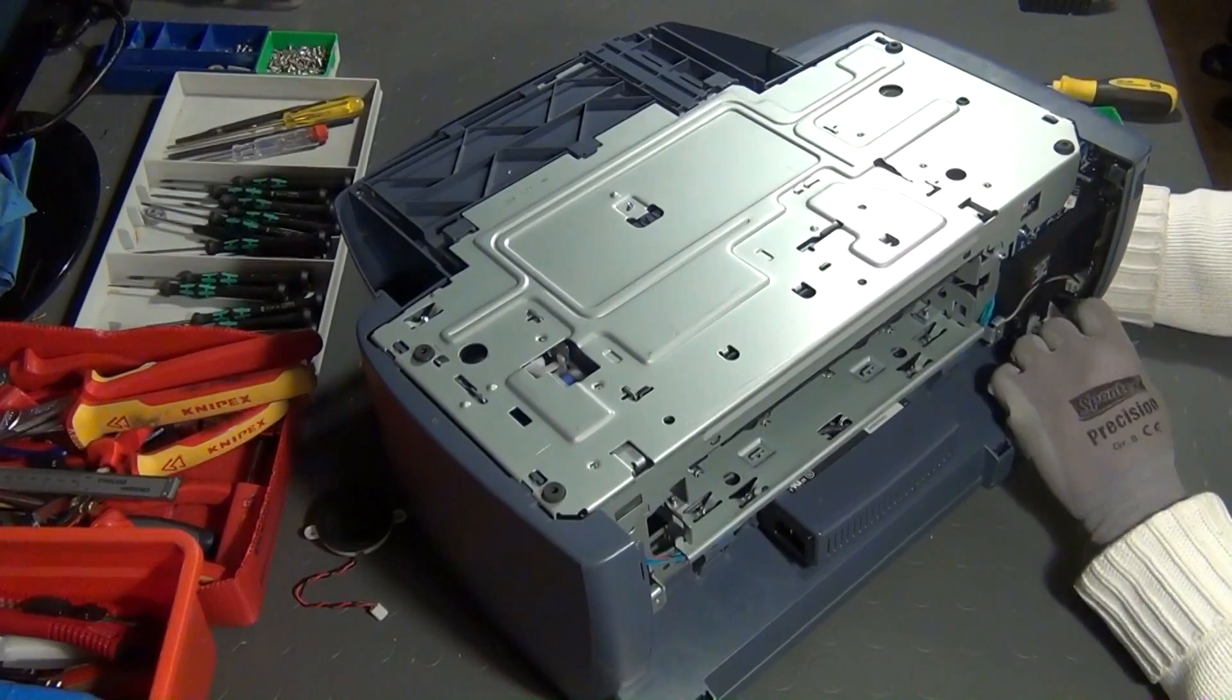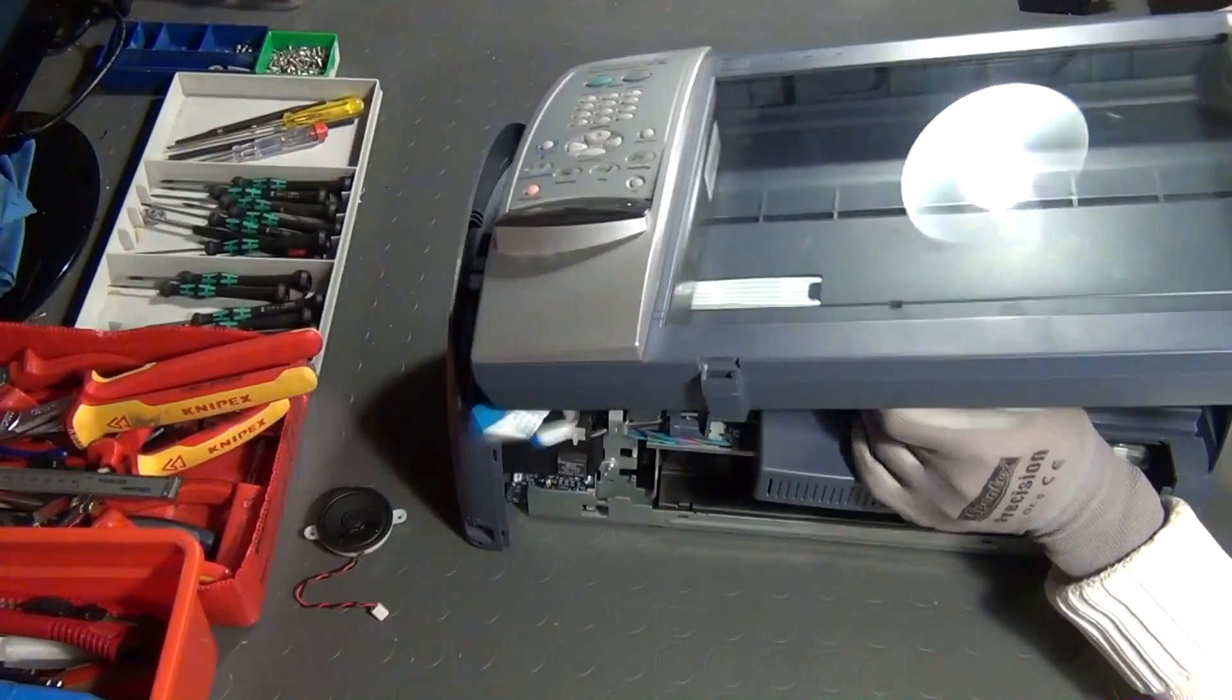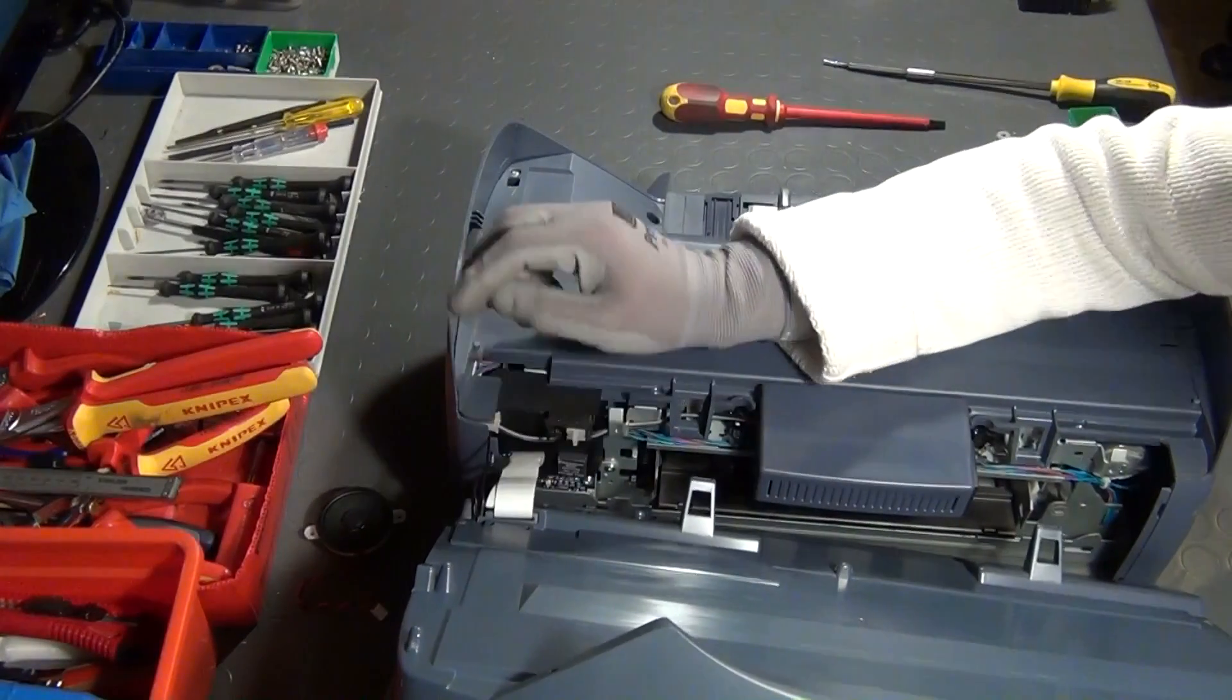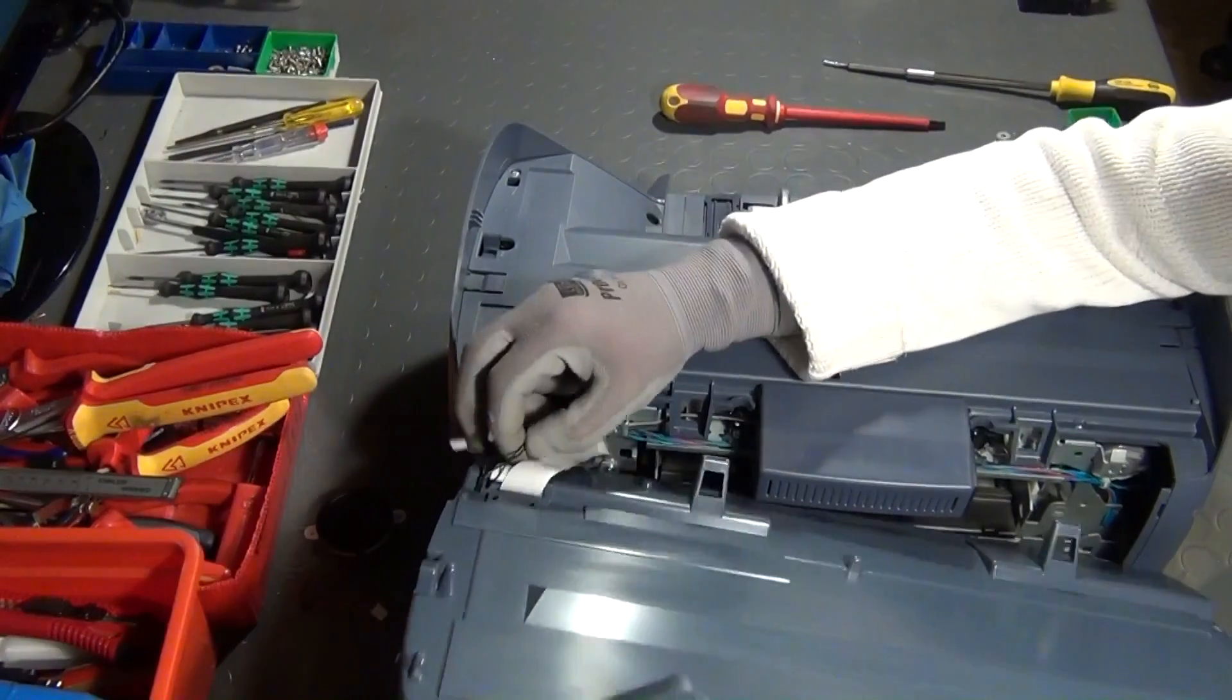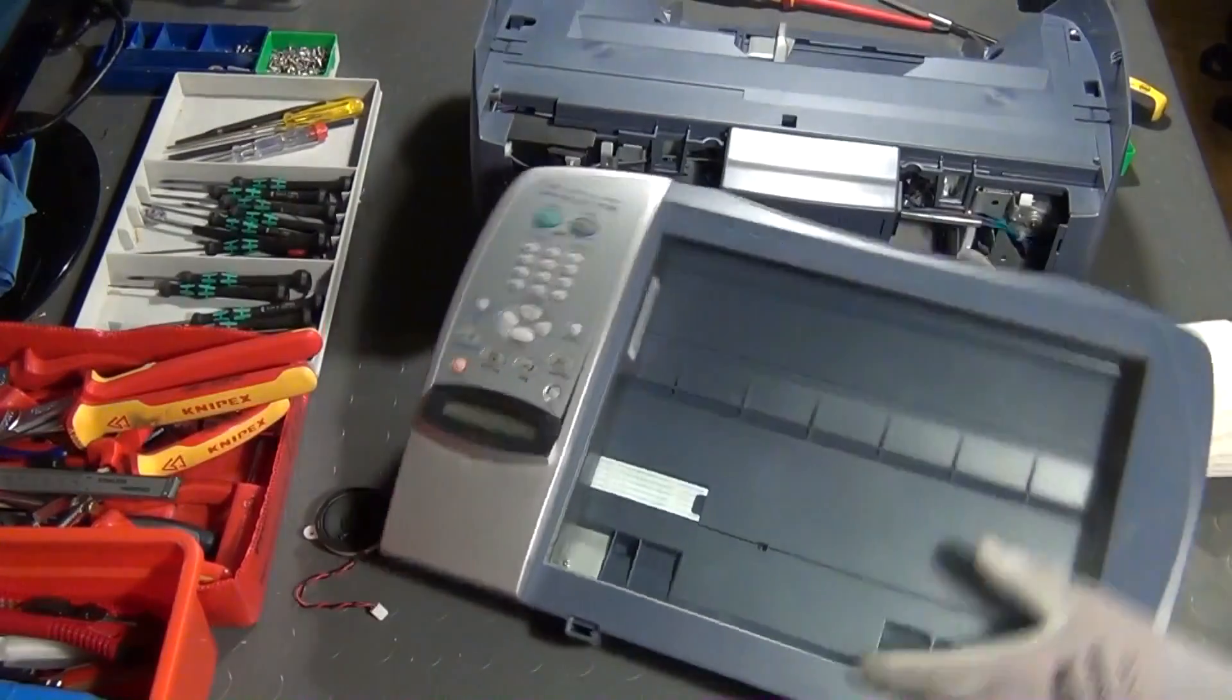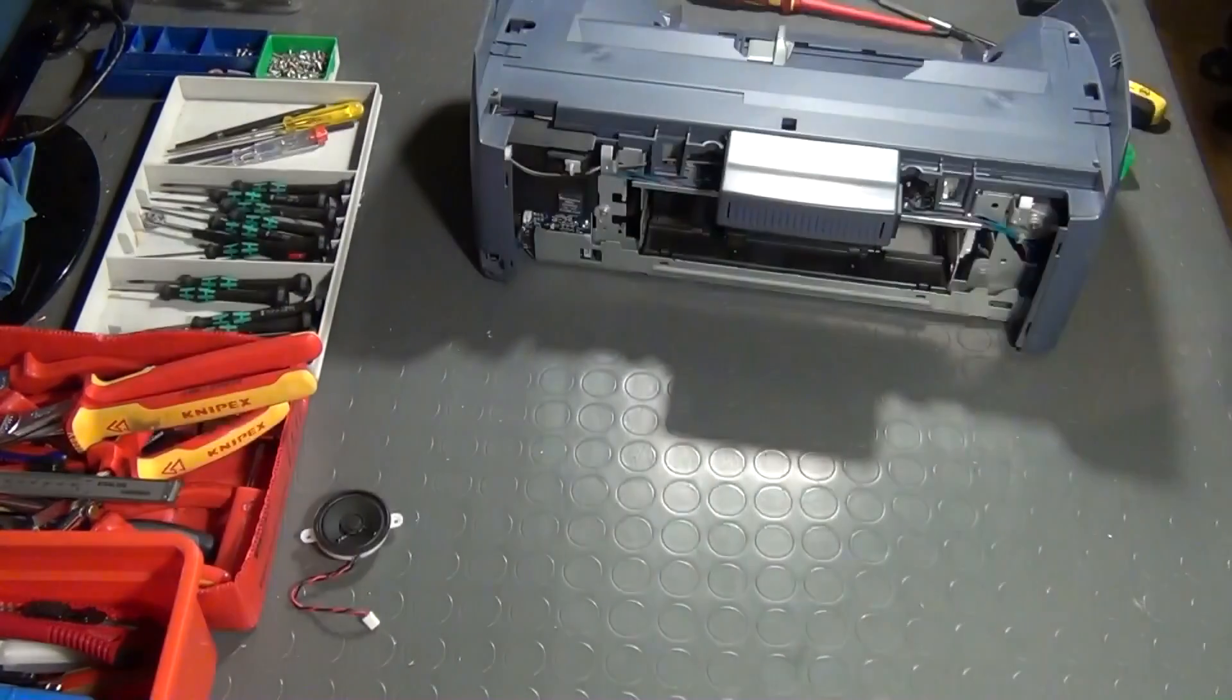With some of the plastic covers removed and after unplugging some flat flex cables and wires, it should be possible to separate the entire scanner unit from the printer at once. We will take apart the scanner unit later after we have finished disassembling the printer.